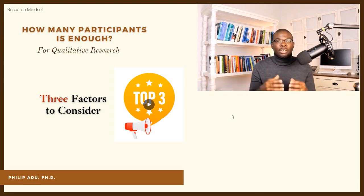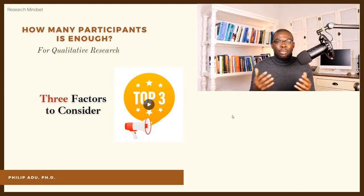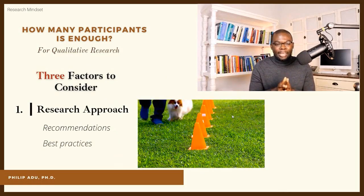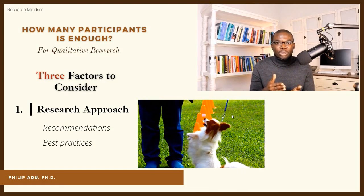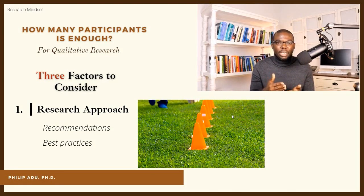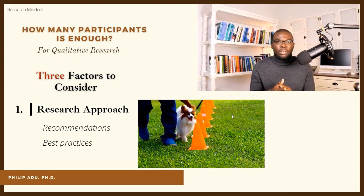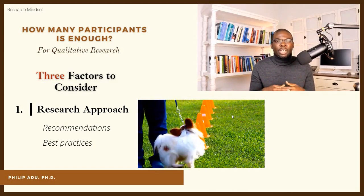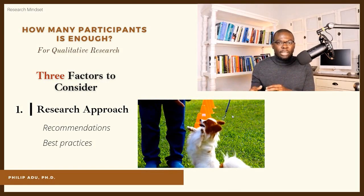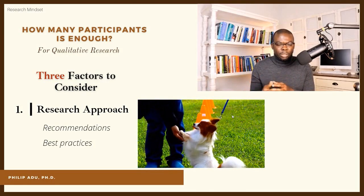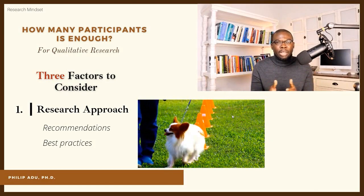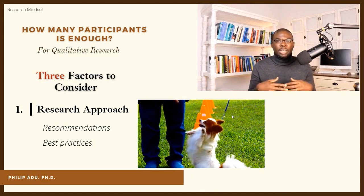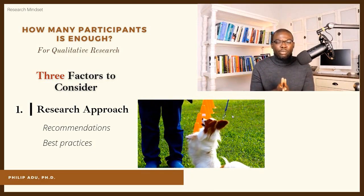There are three factors that you can consider to help you determine the number of participants for your study. One of the factors is about your research approach. Based on the selected research approach, you can look into the recommendations given by qualitative researchers concerning the number of participants needed. You can also look into best practices — what studies have been done using this approach, and how many participants did they use to collect rich information?